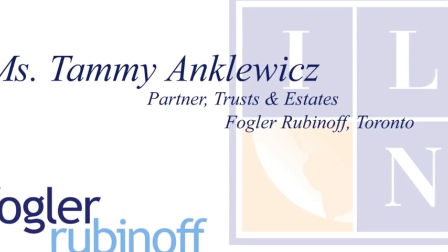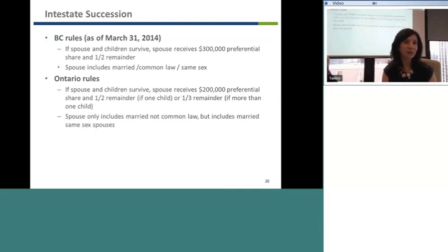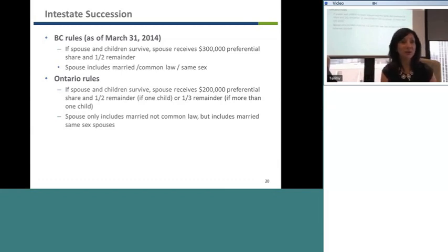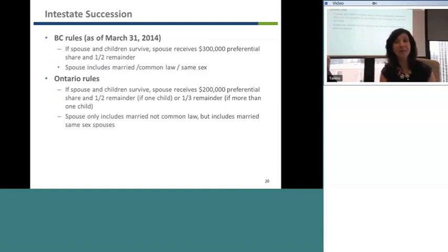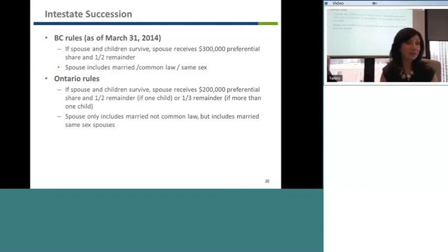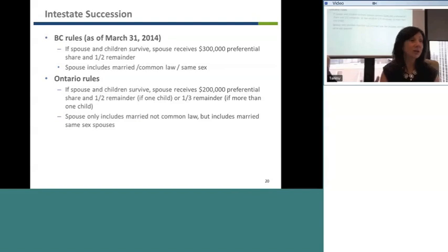In Ontario, the rules aren't that different from B.C. Our preferential share is only $200,000 — theirs is going up to $300,000 because it's newer legislation. The difference in Ontario is that it's only married spouses who are entitled to the preferential share and to inherit on an intestacy. Almost all of our legislation has been updated to reflect equality between common law and married spouses and same-sex couples, but not for this particular purpose. So it's $200,000 as a preferential share; if there's a spouse and one child, it's split 50-50 for the remainder; if there's more than one child, the children share two-thirds and the spouse receives one-third.